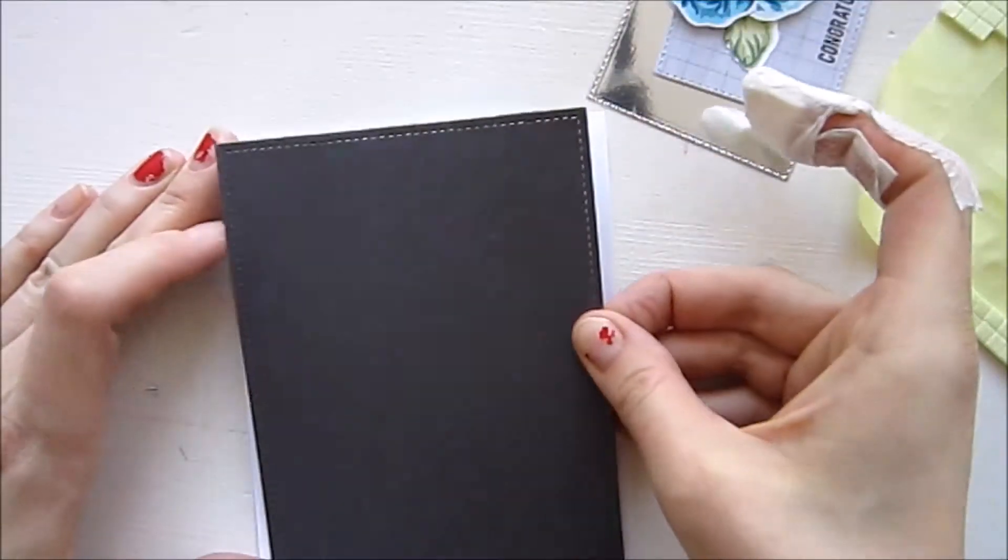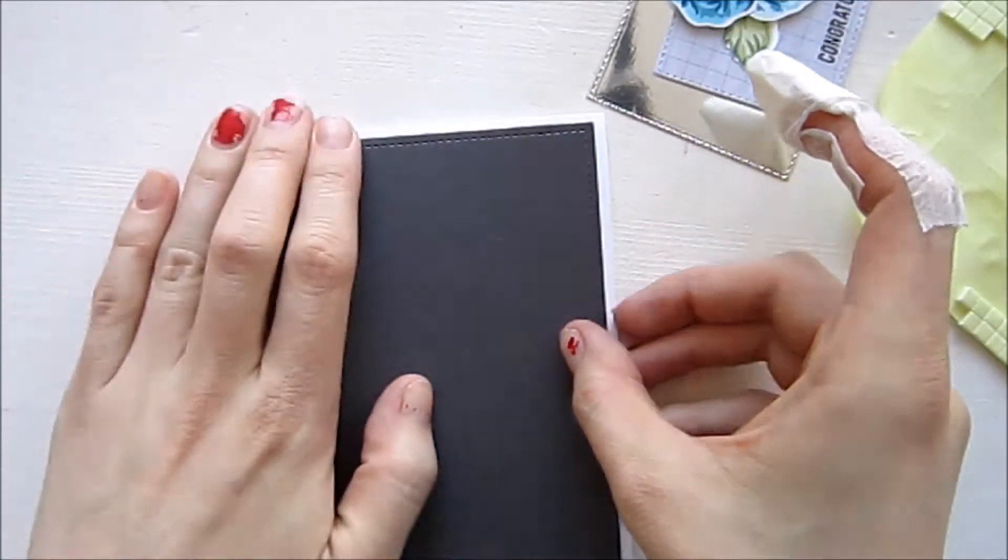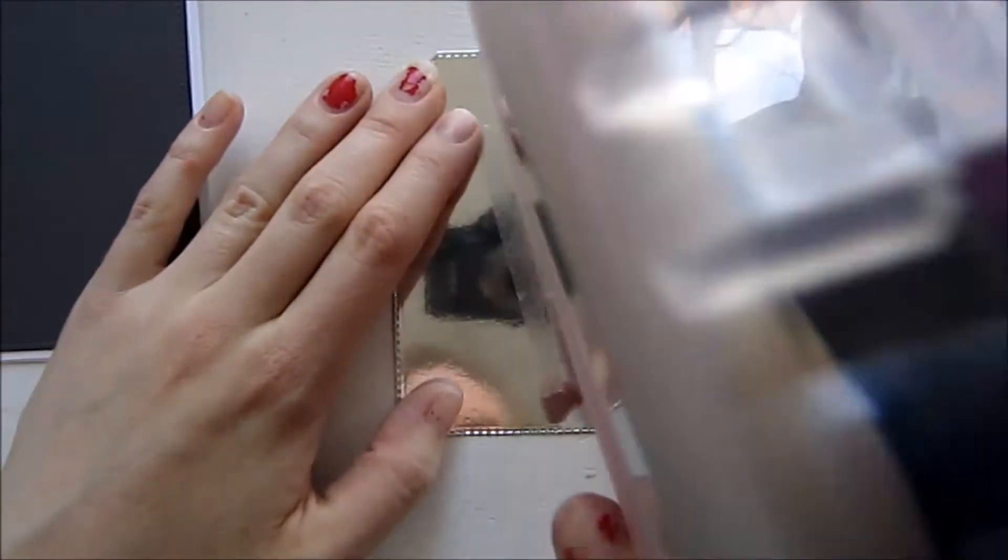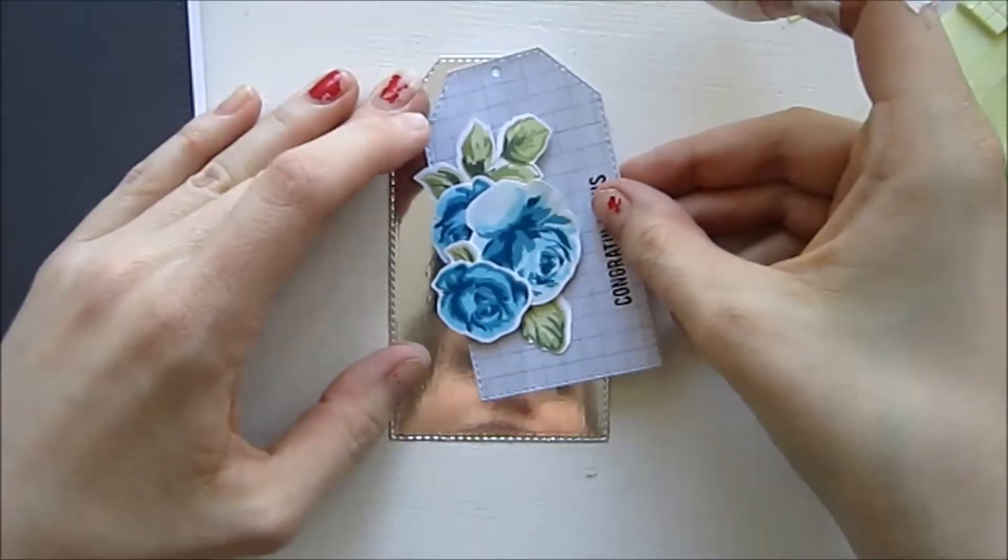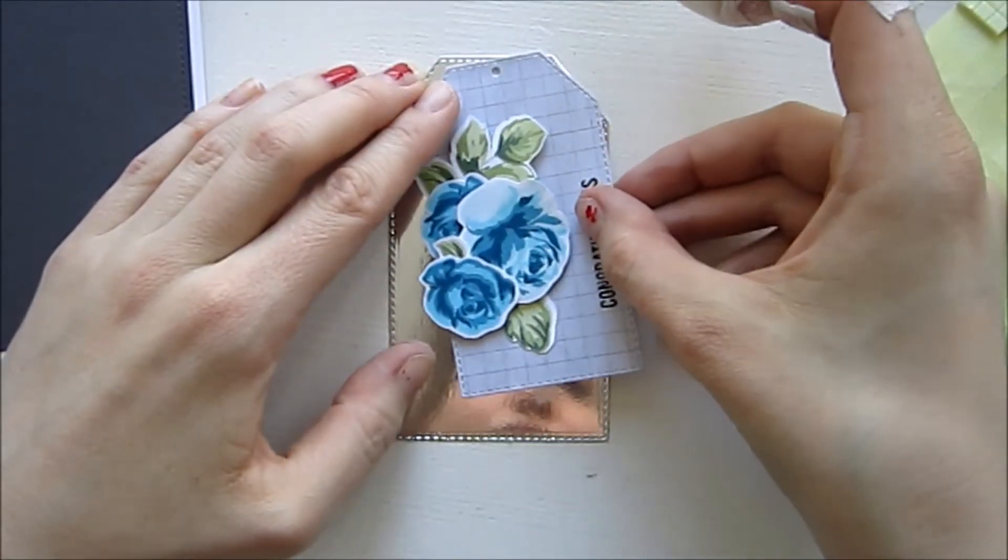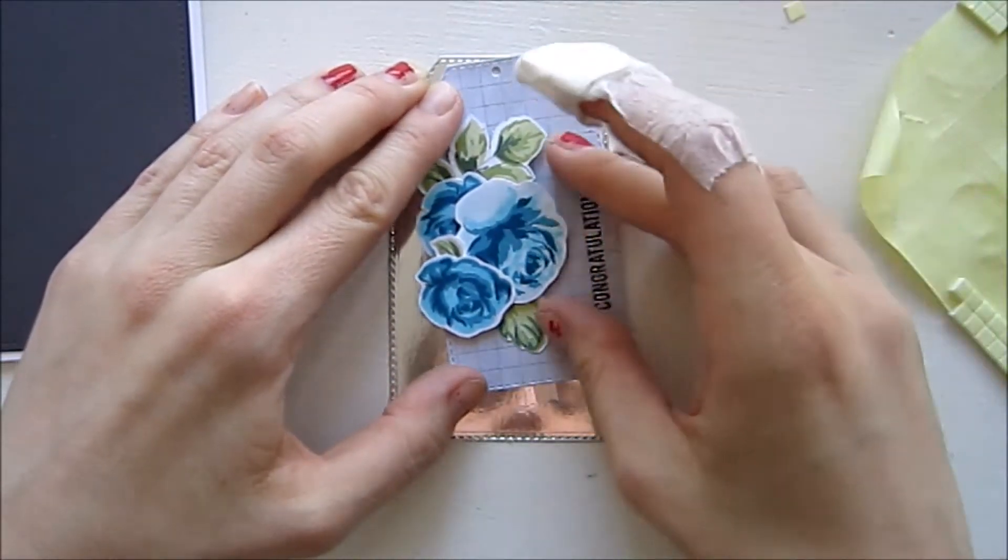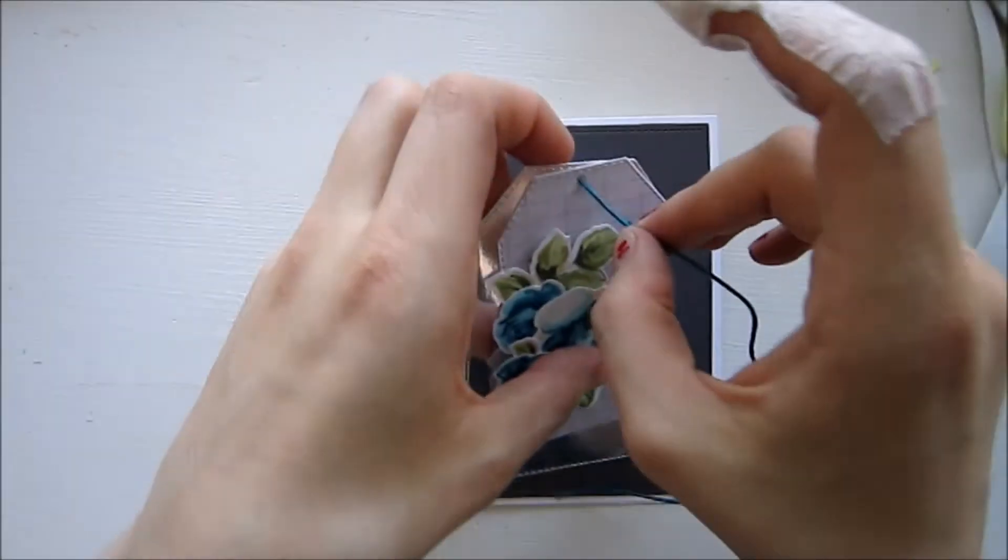Now I'm going to adhere this gray panel down on our top folded note card and as you can see it leaves a white border around the panel and I really love how that is turning out. I think it always is nice when you can frame up your card.